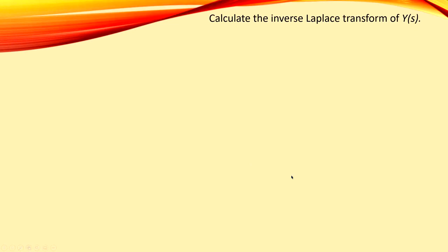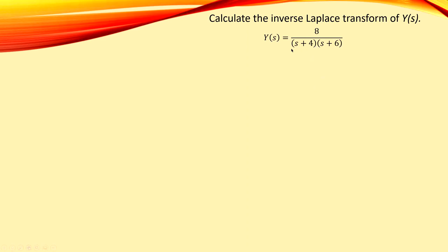We would like to calculate the inverse Laplace transform of a transfer function Y(s), which is shown here. This transfer function has two roots, as you can see here, at minus 4 and minus 6. These are real and also distinct — they are not equal to each other. The nice thing about this transfer function is that it is already given in a nice segmented form for the roots. So we have a second order transfer function, and the denominator is already given in separate parentheses.